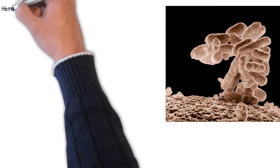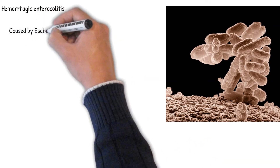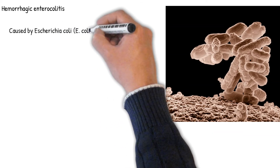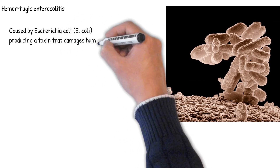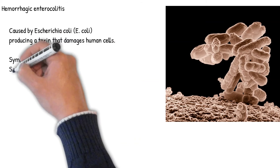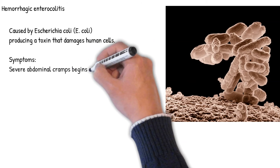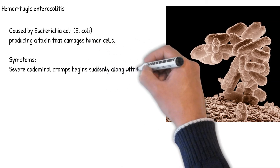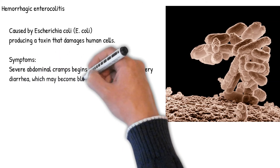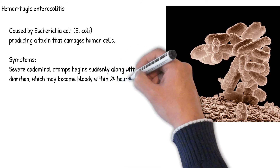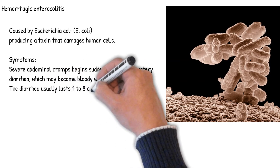Hemorrhagic enterocolitis occurs due to a bacterial infection caused by Escherichia coli. The E. coli bacterium infects the intestines, producing a toxin that damages human cells. It is characterized by severe abdominal cramps that begin suddenly along with watery diarrhea, which may become bloody within 24 hours. Some people may also experience a fever. If bacteria enter the bloodstream, the infection may spread to and damage other organs. The diarrhea usually lasts 1-8 days. Fever is usually absent or mild but can occasionally exceed 102°F (39°C).